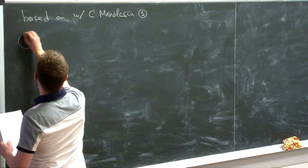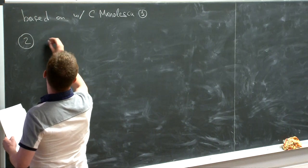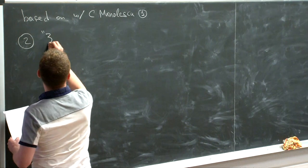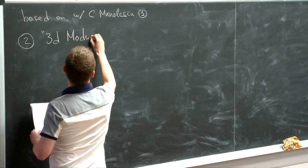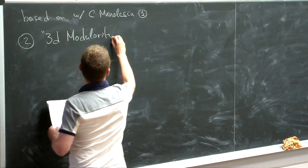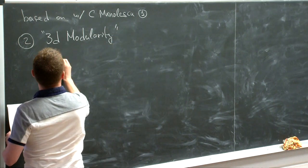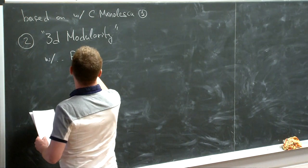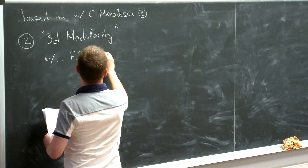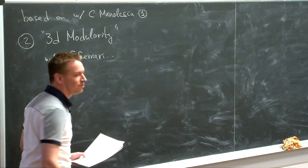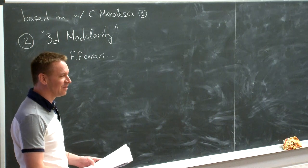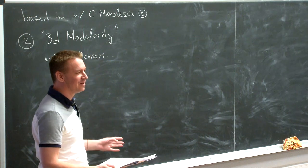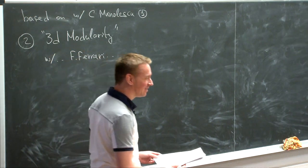Reference number two is work with a number of people, so it's easier to remember it by the title. It's called 3D Modularity. It has a number of authors, but most prominently it has Francesca Ferrari among collaborators. And since Francesca is here — a local, she's right here in the audience — we can ask her all kinds of questions. If my talk is unclear, she's responsible for everything that's unclear.